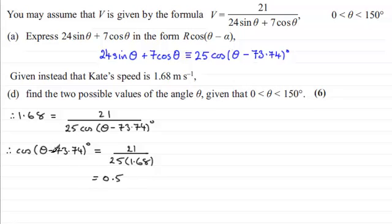And if you work this out you find you end up with 0.5, which is nice because we should be familiar with this—the cosine of an angle giving 0.5 is equal to essentially 60 degrees. But if I just show you the working: theta minus 73.74 degrees equals the inverse cosine of 0.5, and it is 60 degrees.